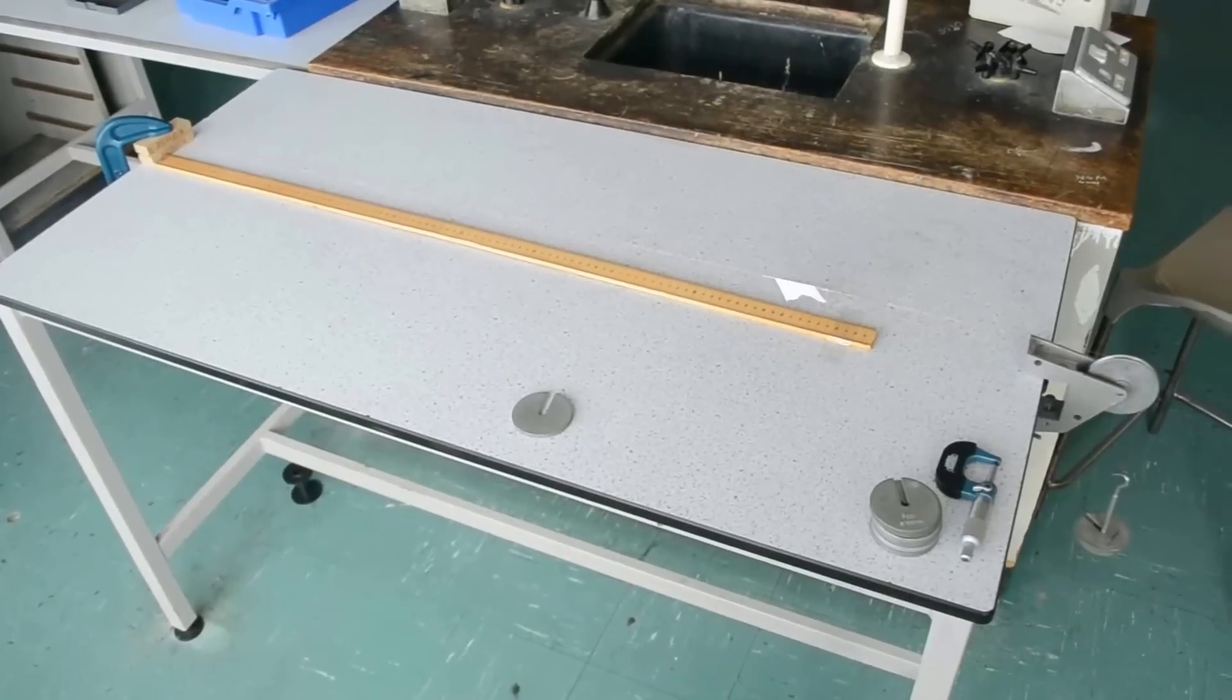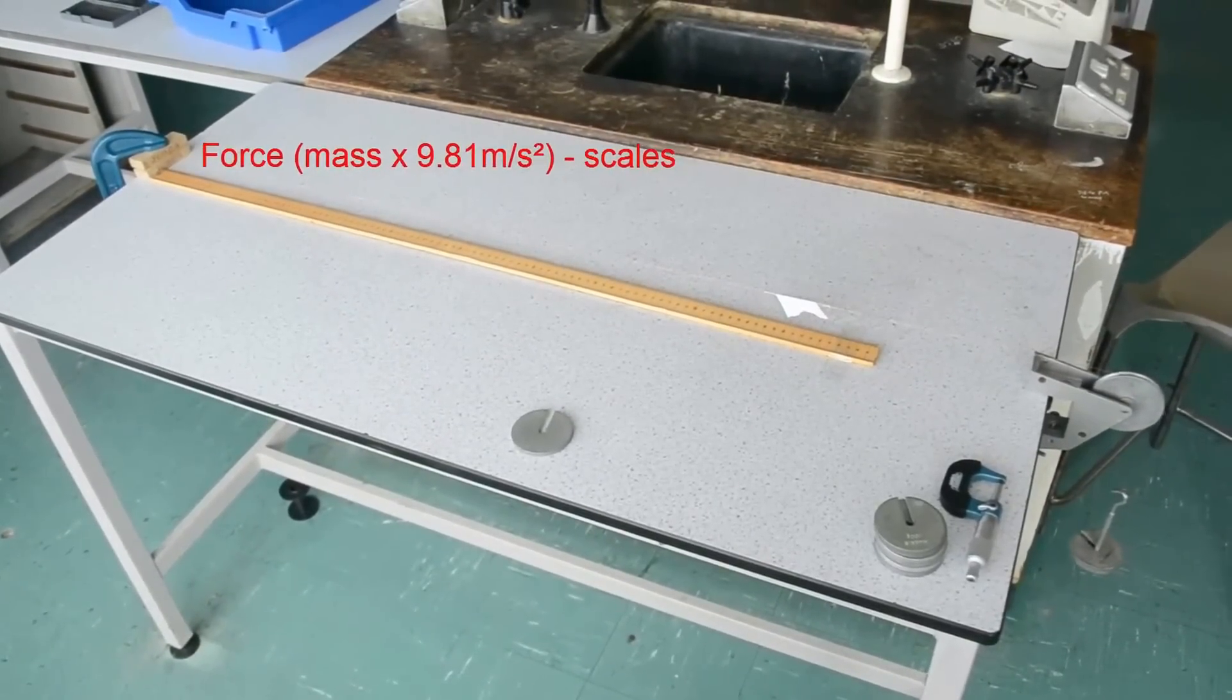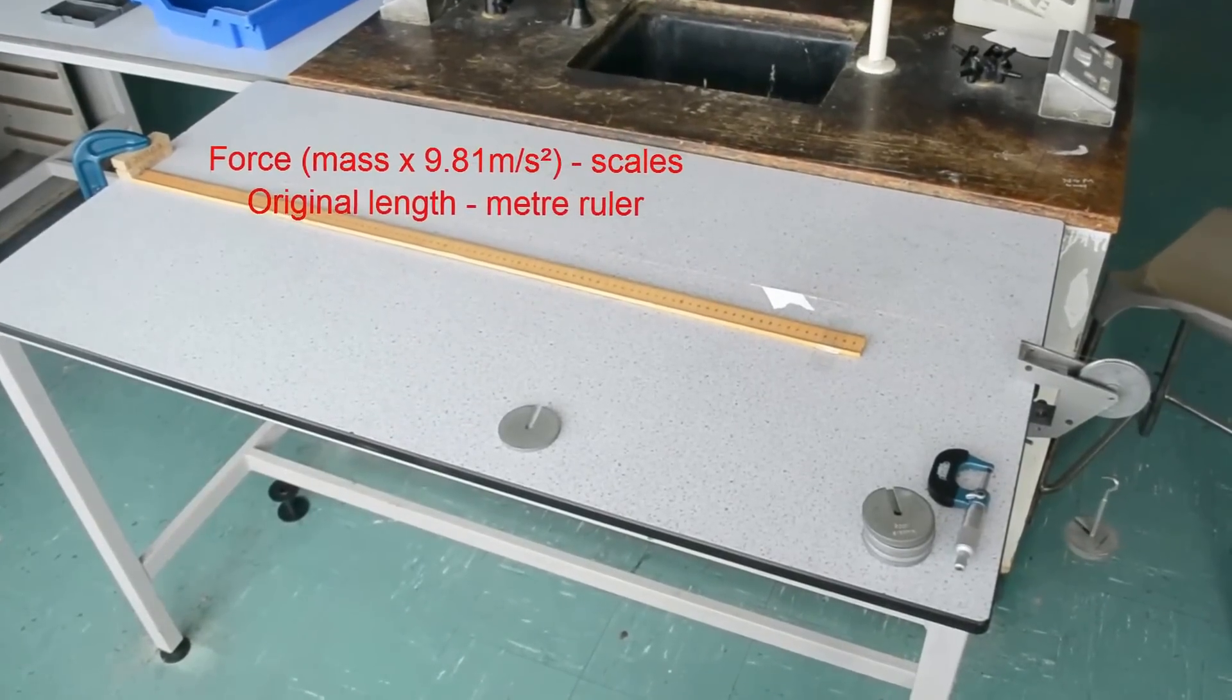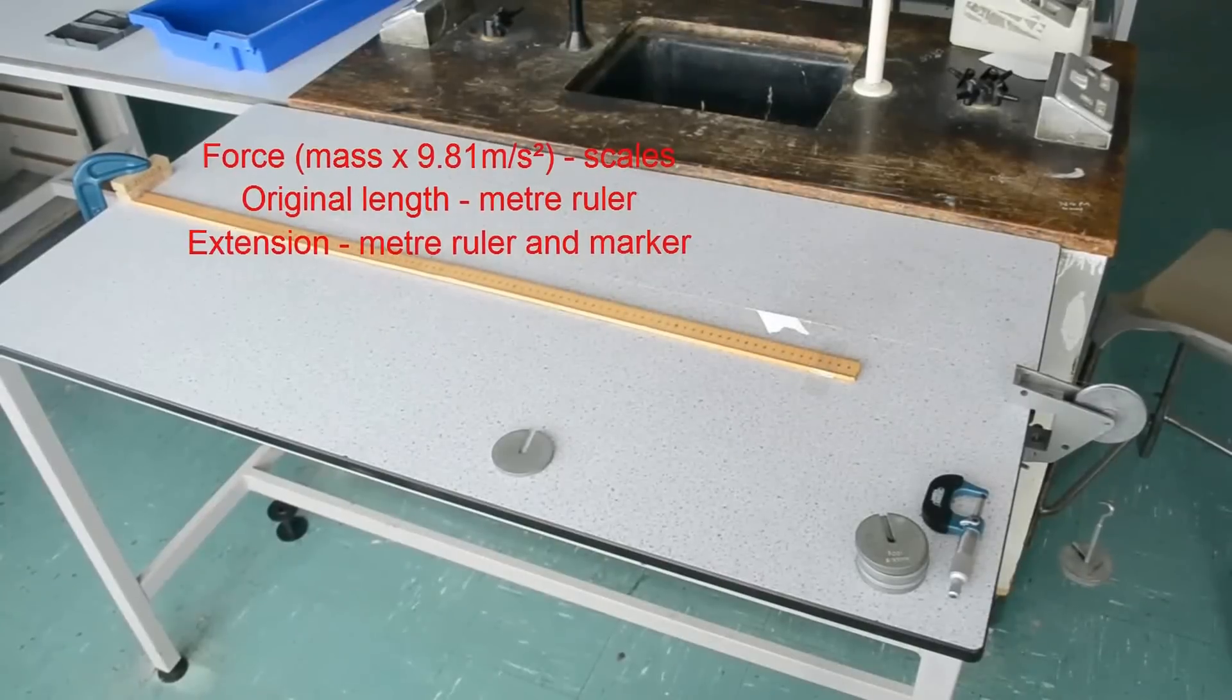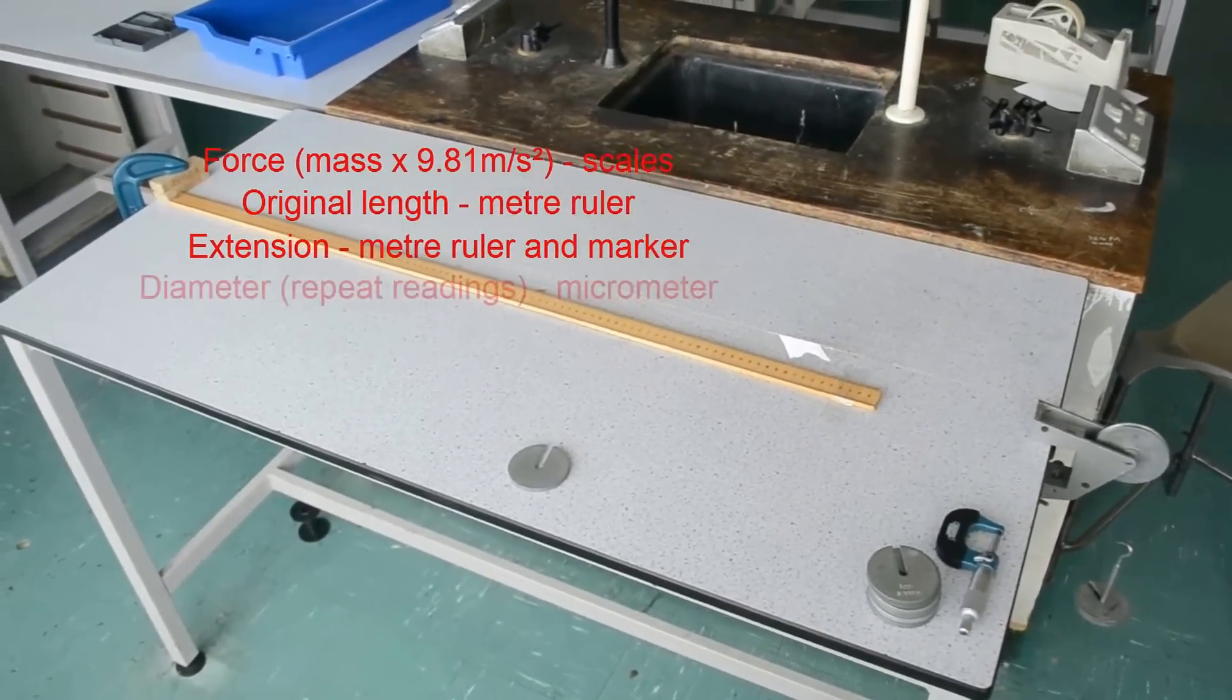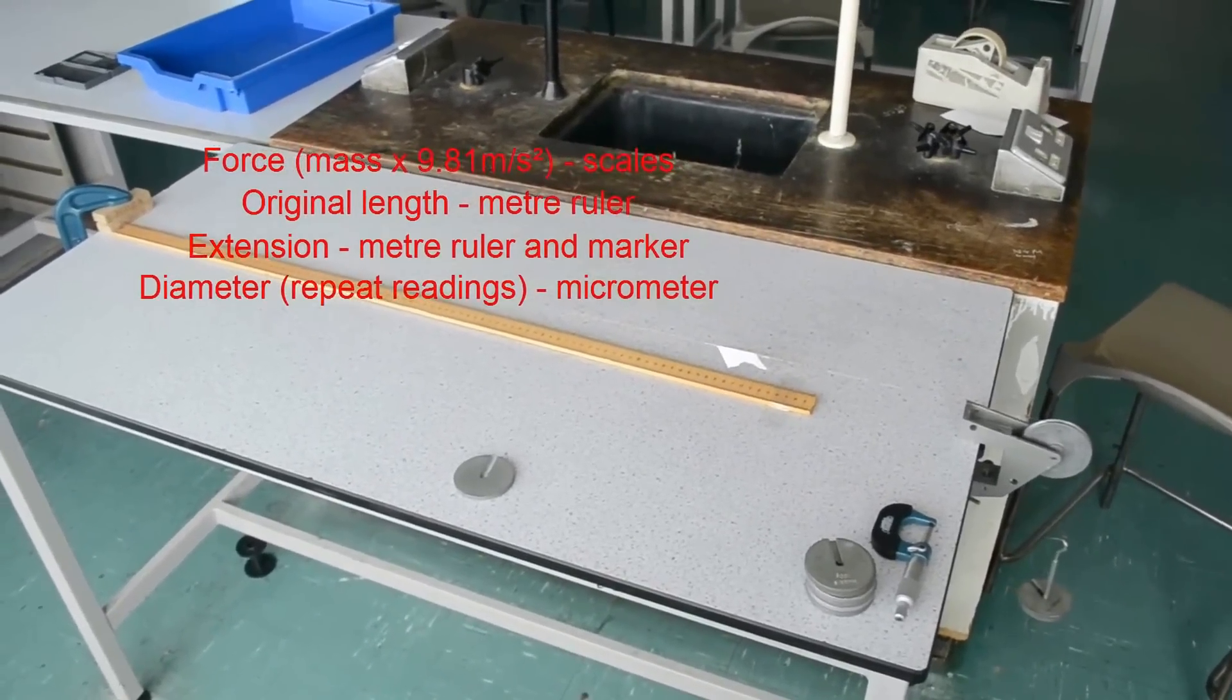So the outcome of this experiment will be that for every mass you attach to the end of the wire, you'll record the force by multiplying the mass by 9.81, the length using the meter ruler between the block and the marker, the extension measured against the meter ruler using the marker, the diameter in a few places to find the average and then use that to work out the cross-sectional area.